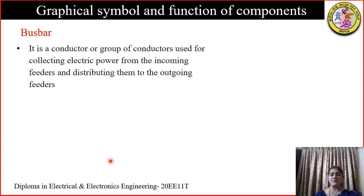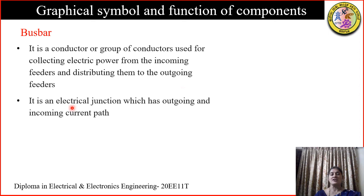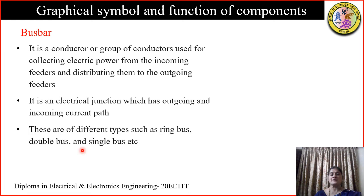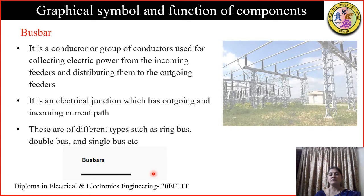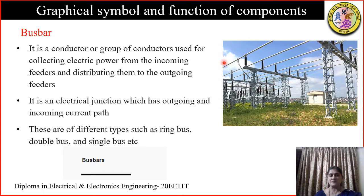The next component is the bus bar. A bus bar is a conductor used for collecting power. Every substation will have incoming lines and outgoing lines, and the bus bar provides an electrical junction for outgoing and incoming current paths. There are different types of bus bar connections depending upon the level of reliability required, including ring bars, double bars, and single bars. The bus bar is shown by a single thick line in diagrams.